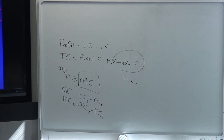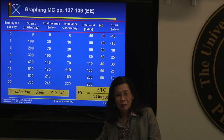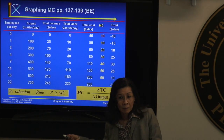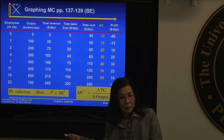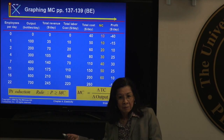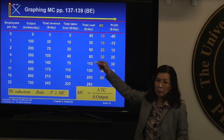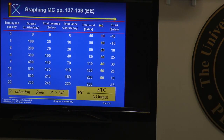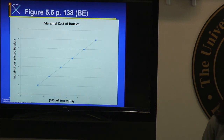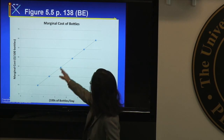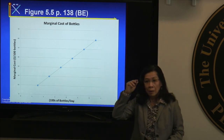Do you see a trend in marginal cost as you produce more? There's a pattern — it goes up. As you produce more, all the numbers go up. So if you look at the diagram on page 138, it looks like that. As you produce more units, it goes up like a curve.